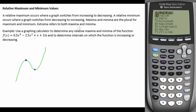Go down to Maximum and press Enter. It asks us to do three things. First it wants a left bound, so that means we need to go to the left of our maximum and press Enter. Now it wants a right bound, so now we have to go to the right of our maximum. The third thing it asks us to do is to guess.